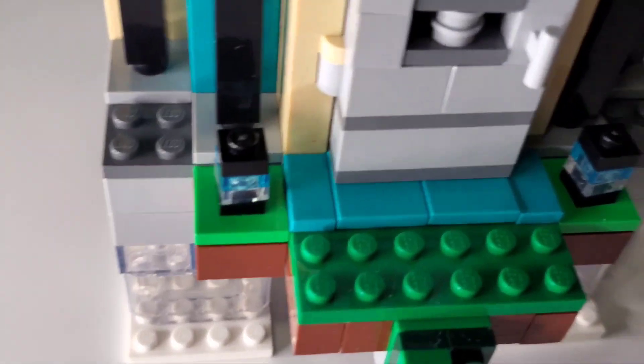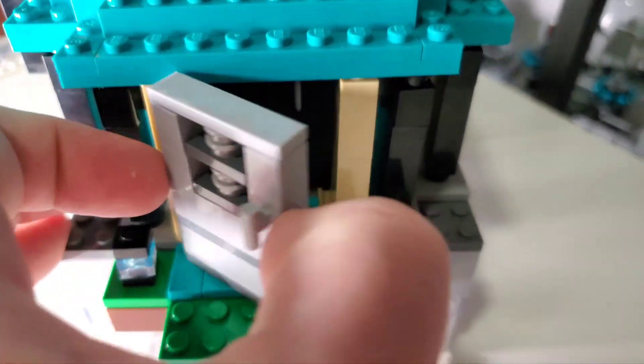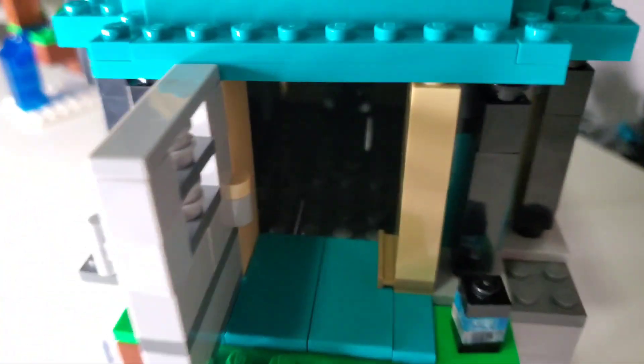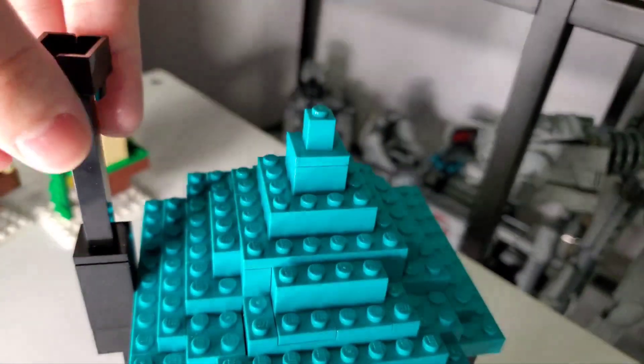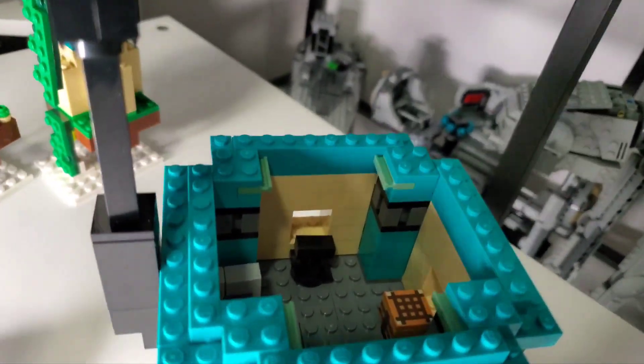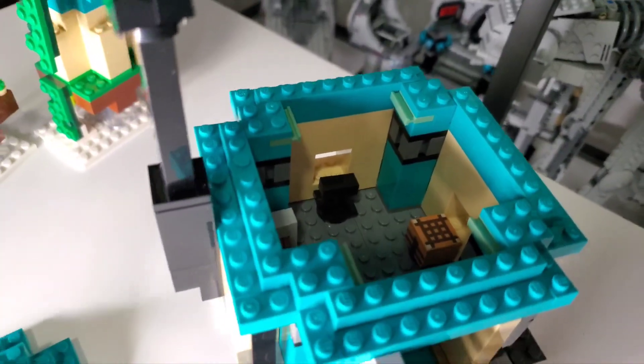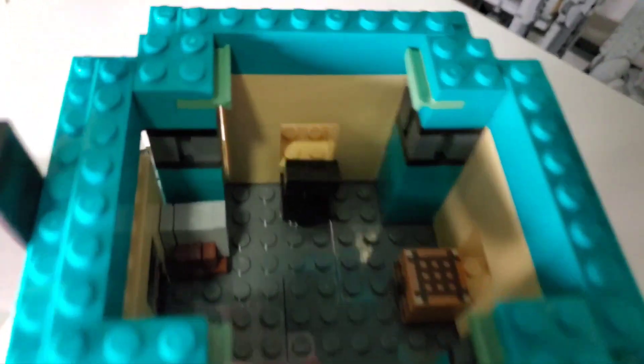On the front we do have some soul lanterns to kind of light up the front, and if we open up this iron door we can step inside to see the poorly lit interior, which we can get a better access view into if we simply lift up the top, which has no real support to it, which means that in transport it might fall out, but it does provide easy interior access.